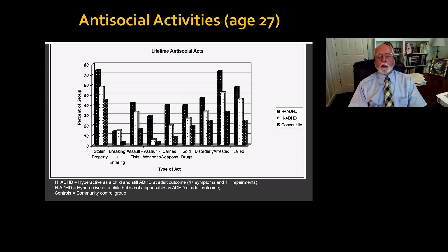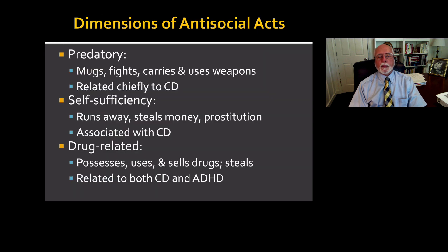Look over at the far right two bars: risk for being arrested, risk for going to jail. Those are very high rates when compared to the typical population, and that has been found in all other longitudinal studies.